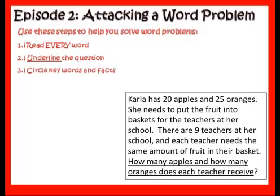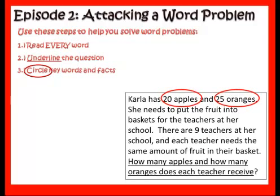Next you're going to circle the key words and facts. There are going to be lots of numbers and lots of facts in most of your word problems. Some of them are helpful and some of them aren't. So take the time to circle the key ones — the ones that are helpful. Like Carla needs 20 apples, she has 25 oranges, there are 9 teachers at the school, and all of the teachers have to have the same amount of fruit. If I don't know those things I'm not going to be able to solve the problem.